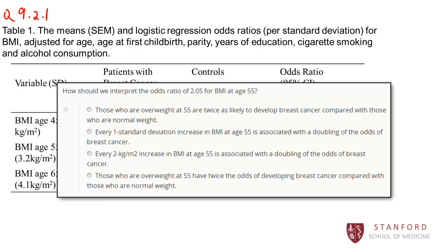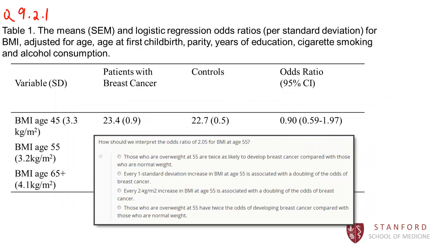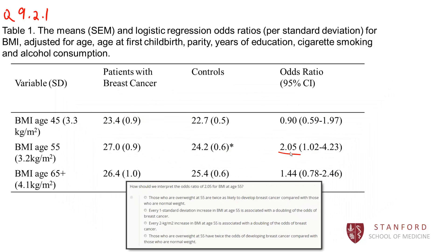The correct answer is B here. The units for the odds ratios are one standard deviation increases in BMI. So a one standard deviation increase in BMI corresponds to an odds ratio of 2.05. It doubles your odds of breast cancer. So B is correct.